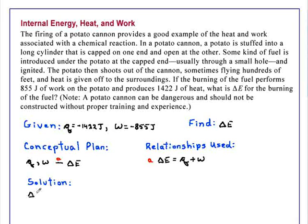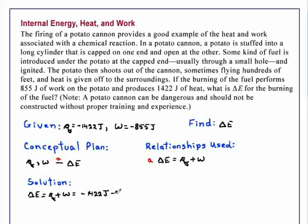So substituting into this equation, delta E equals Q plus W. Q is negative 1422 joules, and the work is negative 855 joules.